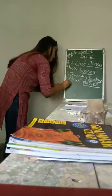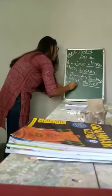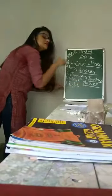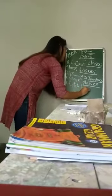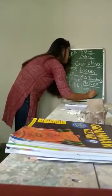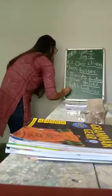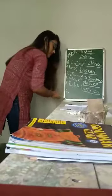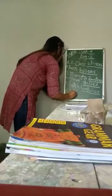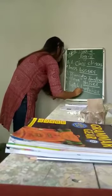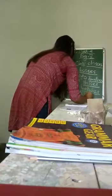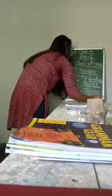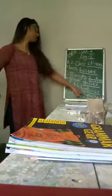Then we have batch, B-A-T-C-H. We learned yesterday that if there is CH, we add ES to make it plural, not S — ES. So the plural of batch is batches, C-H-E-S. Then number 6, we have bench — bench also takes ES, so benches is the plural form.